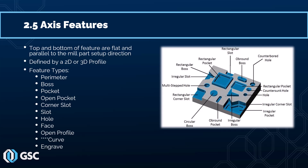Here is a list of all the different two-and-a-half axis feature types available in SOLIDWORKS CAM: perimeter feature, boss feature, pocket feature, open pocket, corner slot, slot, hole, base, open profile, curve, and engrave feature. The only one that is a little bit unique would be the curve feature, which we'll talk about later on.